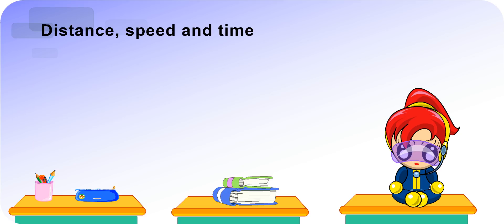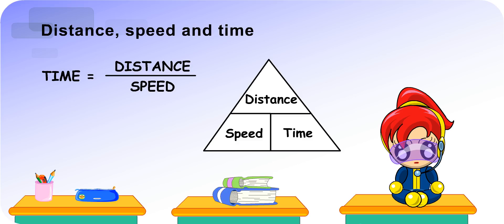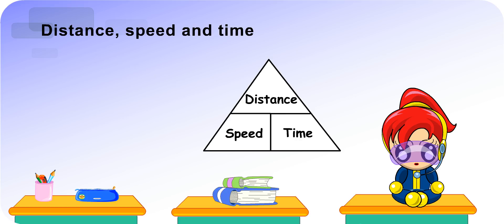Good. We can also find time taken by using the formula. Time equals distance divided by speed. You can use this triangle to help you remember the formula easily. Wow, that's great. Teacher, can you show me how to use it?